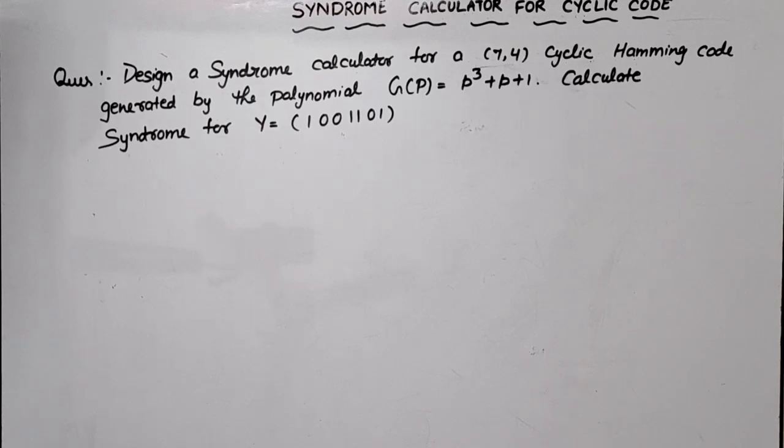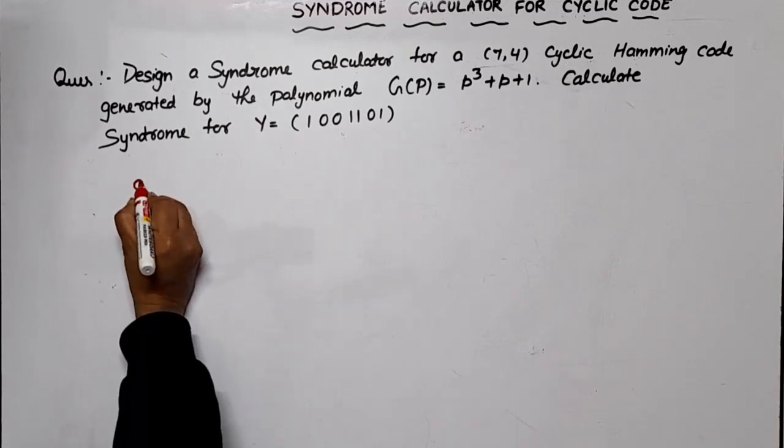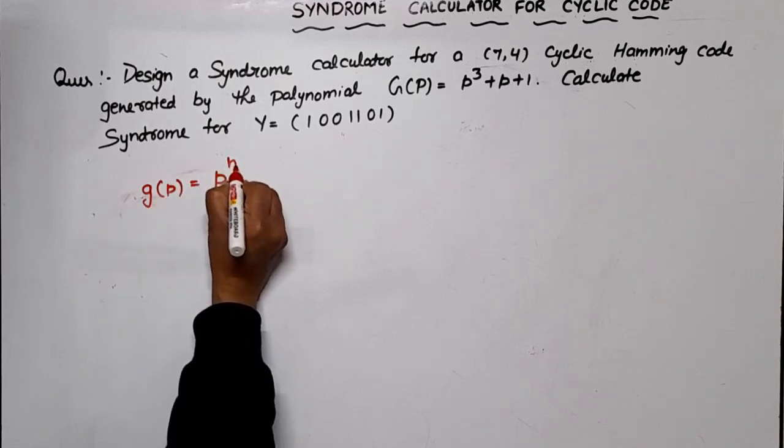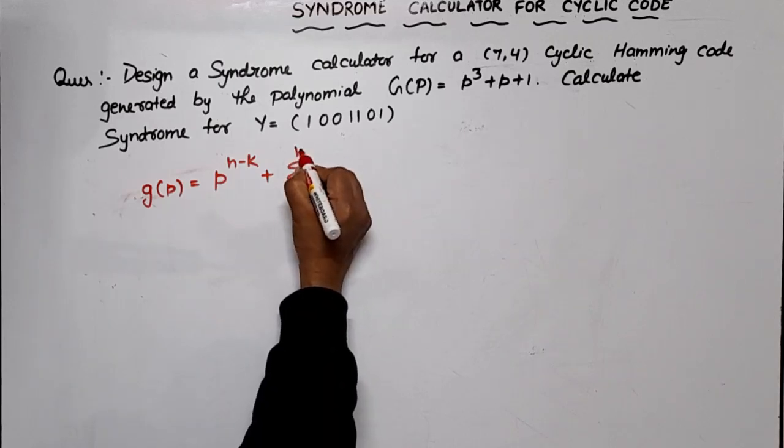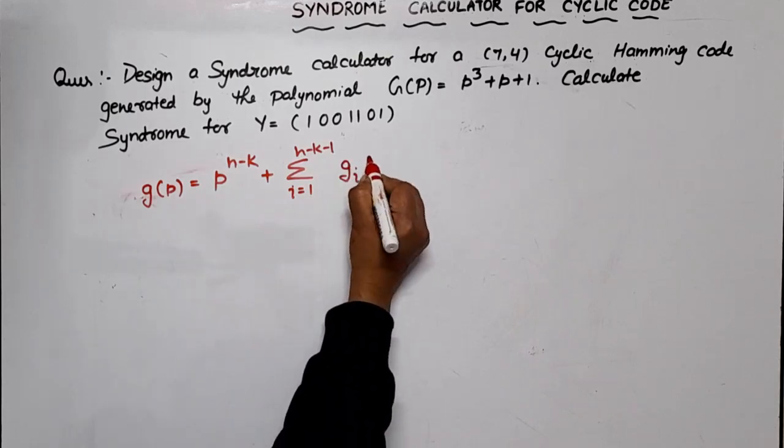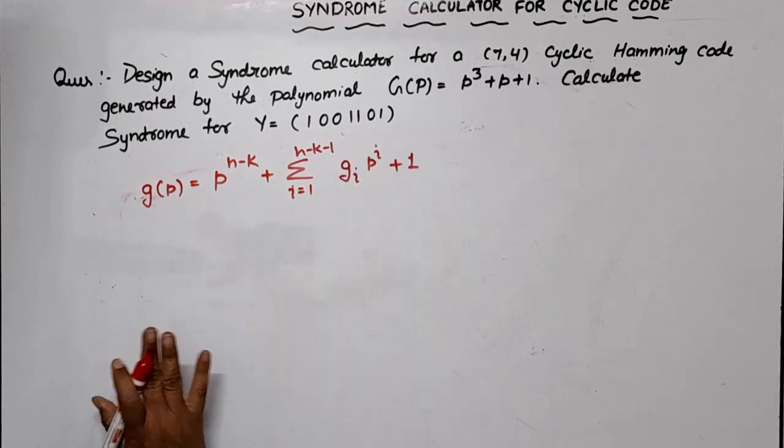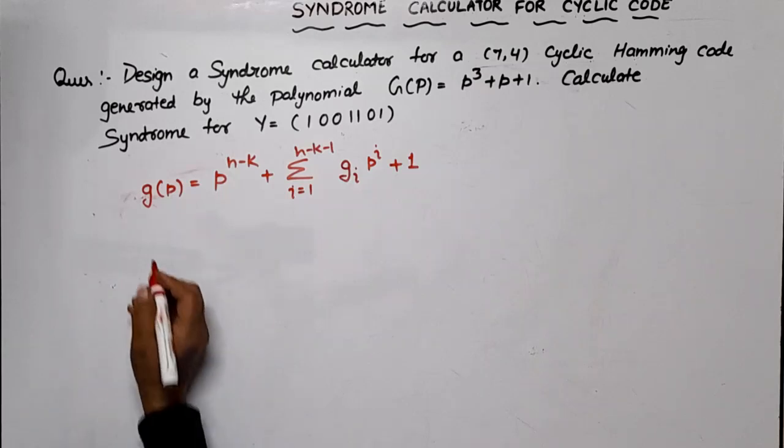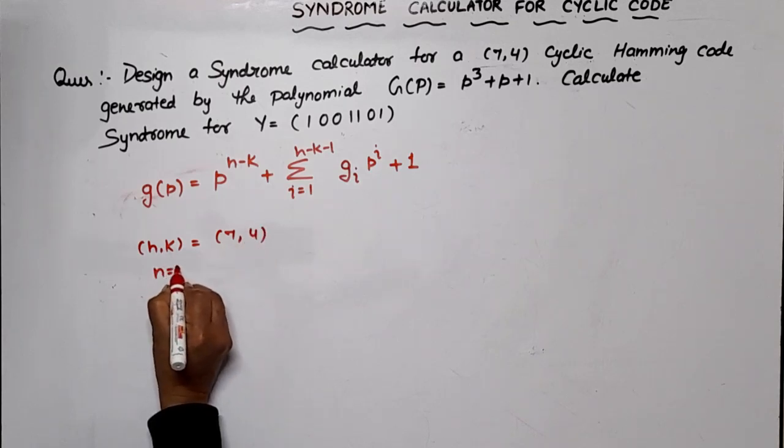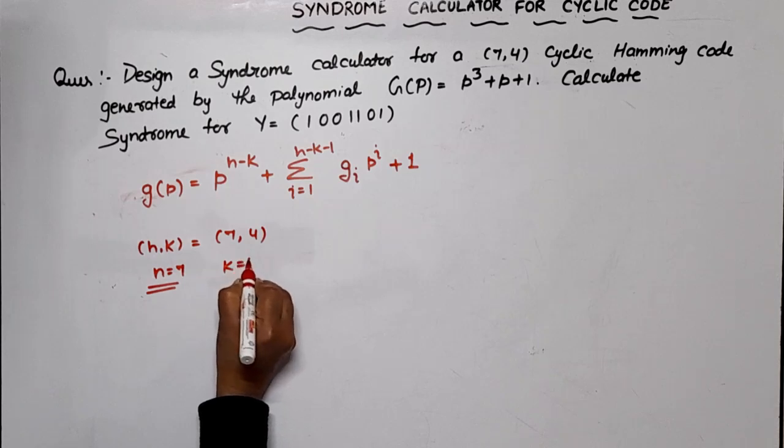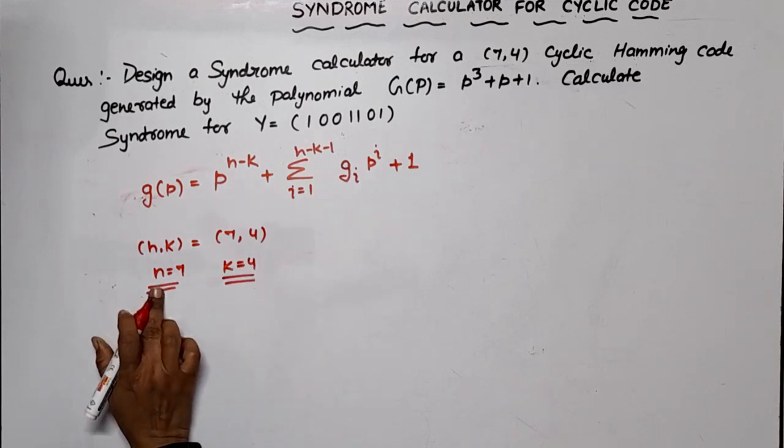First of all, we have to make a calculator here. After designing the calculator, we have to calculate the syndrome by using the same circuit. What is the general equation of generator polynomial? Generator polynomial equation is given by G(P) = P^(n-k) + summation i=1 to n-k-1 G_i P^i + 1. N,K is given (7,4) means N=7, the length of code word, and K=4, the length of message.